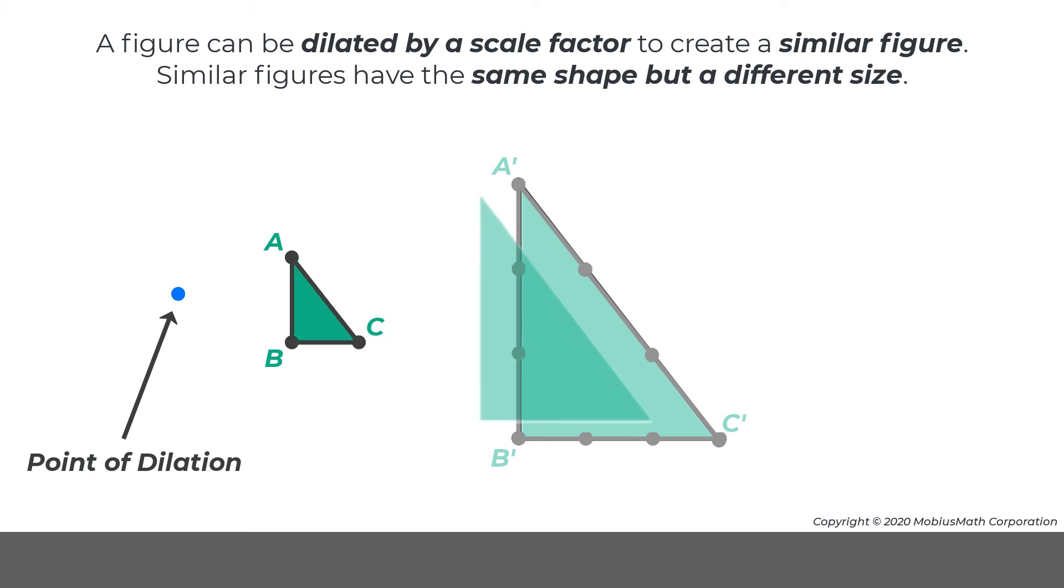Dilations create similar figures that have the same shape but different size because corresponding sides are related by a common scale factor and the corresponding angles are congruent.